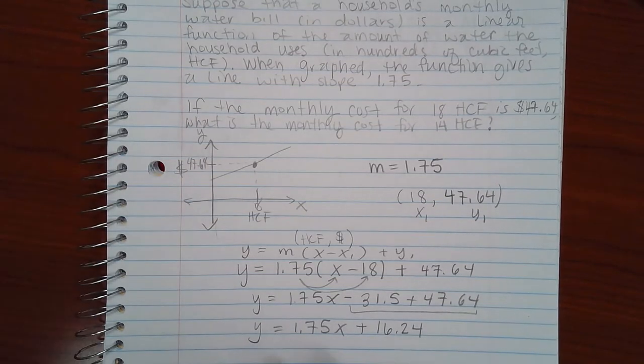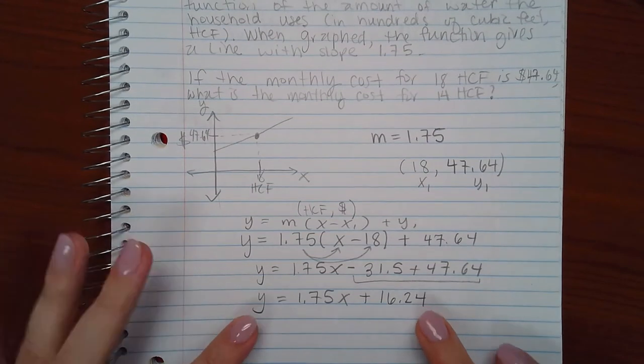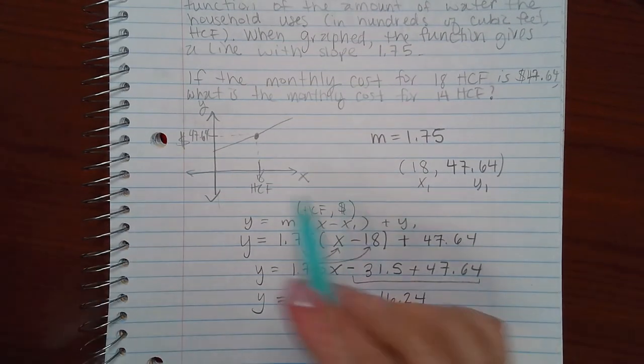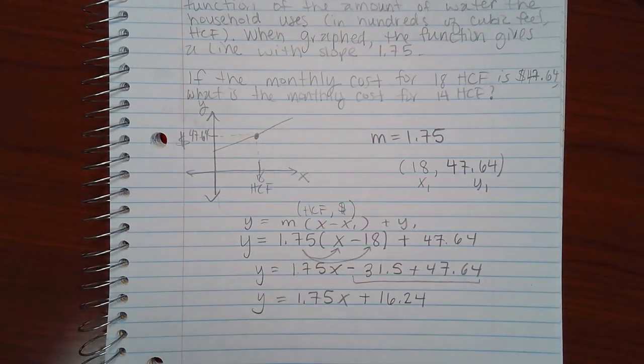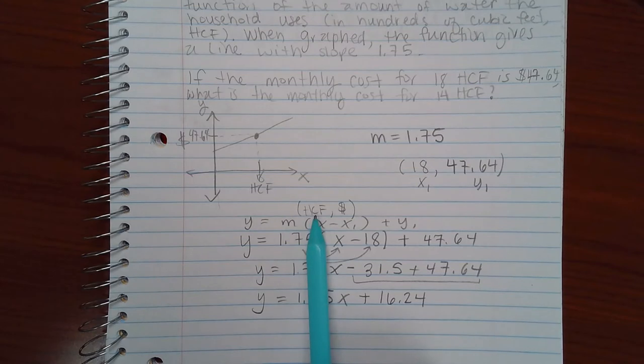Now this is the equation of the line. This is going to help me predict any other number along that line. So it says, what is the cost of 14 HCF? Remember, HCF is the X value.